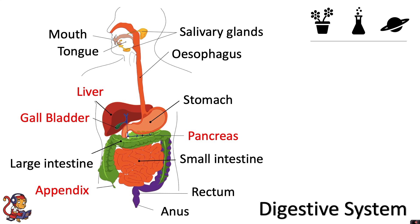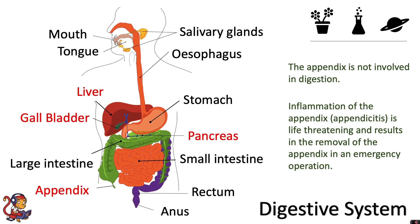Finally you will sometimes see the appendix labeled on a digestive system diagram. The appendix is a small extension of the large intestine at the very start where the small intestine and the large intestine meet. The appendix is not involved in digestion. Inflammation of the appendix, appendicitis, is life-threatening and results in the removal of the appendix in an emergency operation.